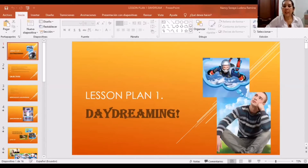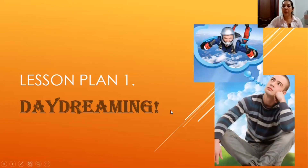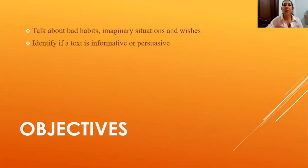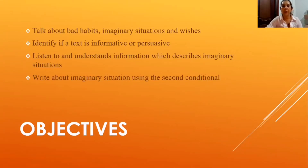Lesson plan number one, Daydreaming. In this opportunity, students talk about what they want to do if they had something. We have to set the objectives for the four abilities. For speaking, they are able to talk about habits, imaginary situations, and wishes. For reading, they are able to identify if a text is informative or persuasive. For listening skills, they are able to listen to and understand information which describes imaginary situations. For writing, they are able to write about imaginary situations using the second conditional, focused on grammar structure.